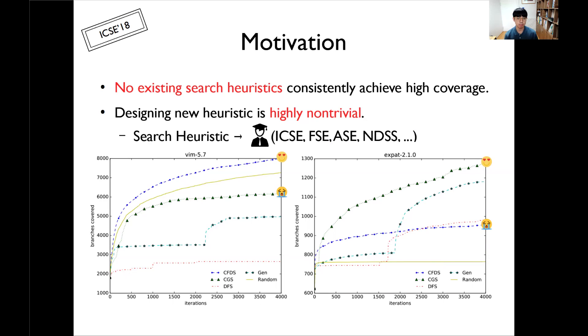I will explain this observation using these two graphs. This graph shows the average performance of the existing search heuristics with the same testing budget. The x-axis means the number of program executions and the y-axis represents the number of covered branches. At VIM, which is the text editor program, CFDF heuristic works quite well. But at XPAT XML parser program, the performance of CFDF heuristic is very poor. On the other hand, CGS is very nice in XPAT, but in VIM, CGS is very poor. And this phenomenon also occurred in other open source C programs.